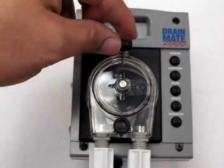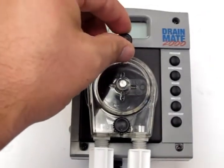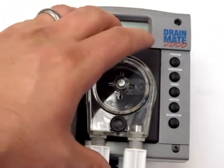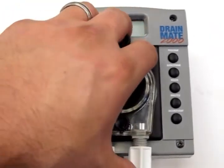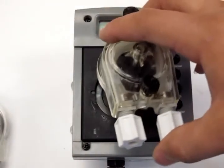To begin changing the tubing, you will push tabs in, twist them. Once you have done so, you can easily remove the pump head.